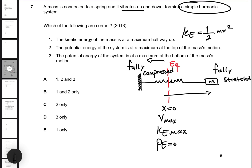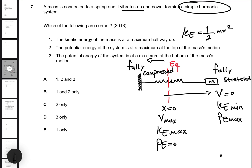Once the mass goes past the equilibrium and reaches the fully stretched point, velocity becomes zero — it stops momentarily and comes back. At that point, kinetic energy is at its minimum, equal to zero, and potential energy is at its maximum because that's when the spring has the highest elastic potential energy. When it returns to the fully compressed point, potential energy is again at its maximum and velocity is zero.